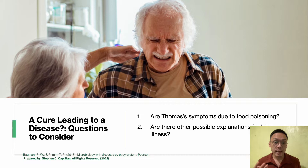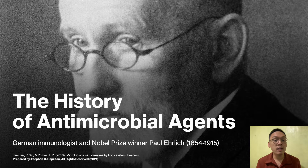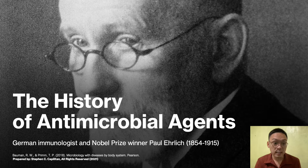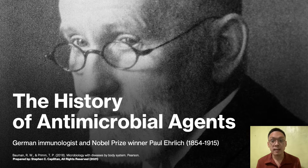We will see the answers to these questions as we progress in the next presentation about antimicrobial resistance. Before that, let's introduce the history of antimicrobial agents. The photo in the background is the German immunologist and Nobel Prize winner Paul Ehrlich (1854–1915). Chemicals that affect physiology in any manner, such as caffeine, alcohol, and tobacco, are called drugs. Drugs that act against diseases are called chemotherapeutic agents.